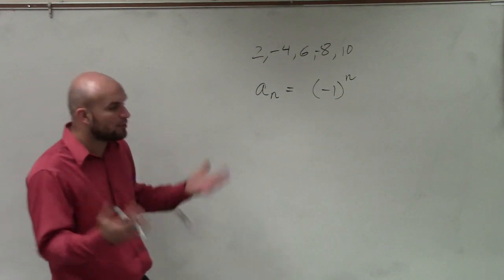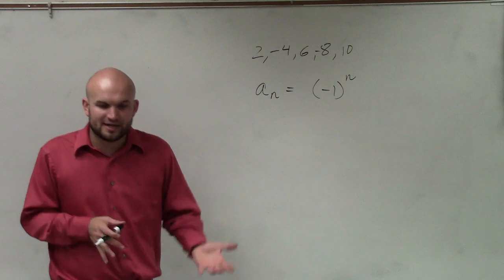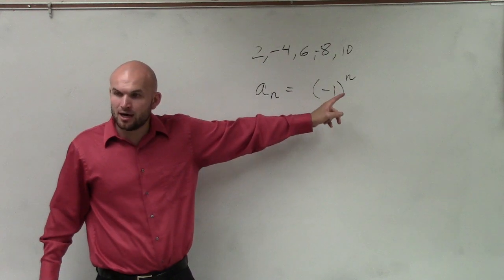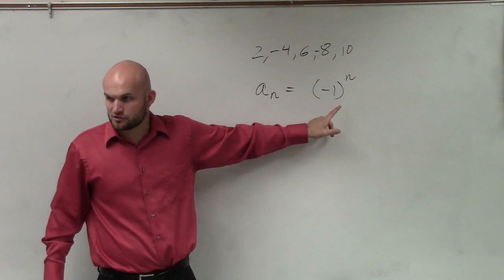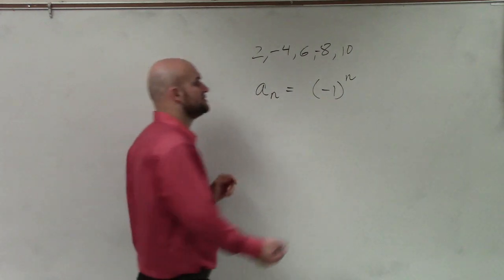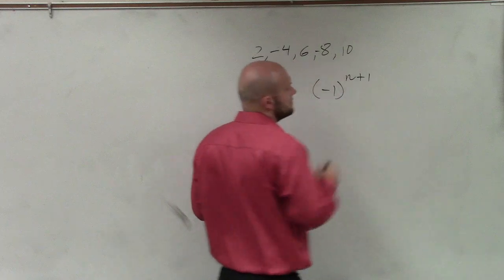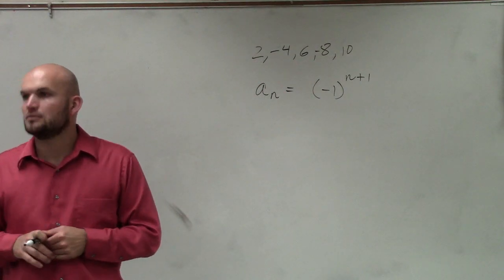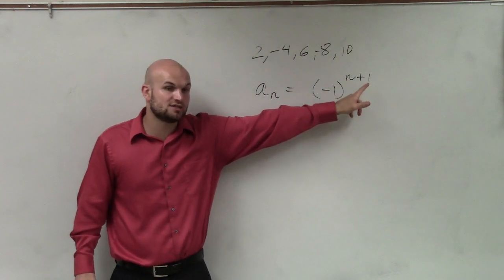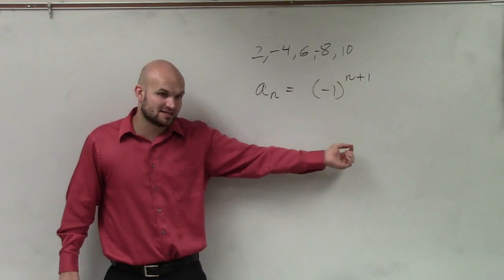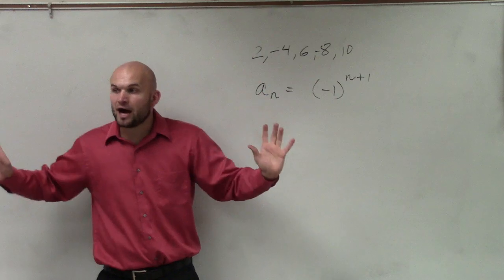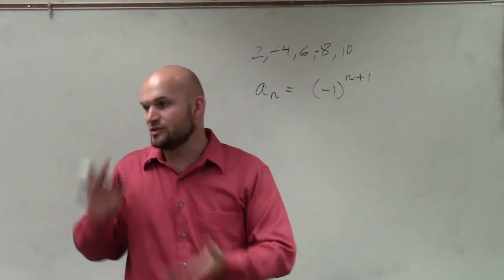Now, remember, when we have an alternating sign, if I put 1 in for n, that's going to make this negative — that would make my first term negative. We noticed that my first term is positive, correct? So what I need to do is add 1 to it. Because think about it: if you put 1 in there, 1 plus 1 is 2, and negative 1 squared is positive 1. So that's going to make my first term positive. I have now resolved the alternating signs.